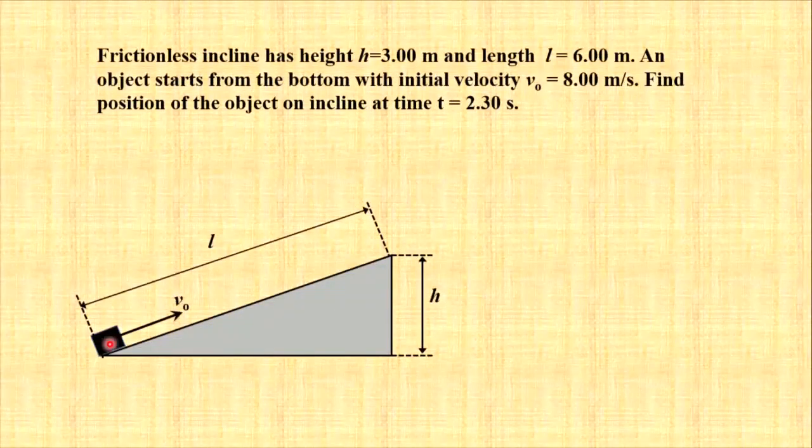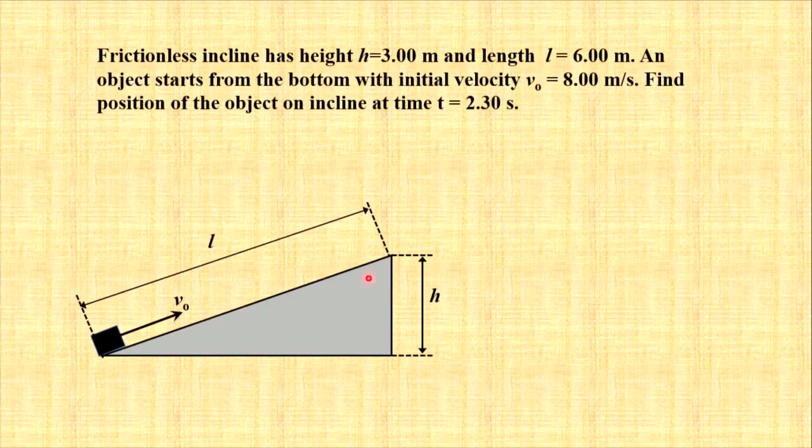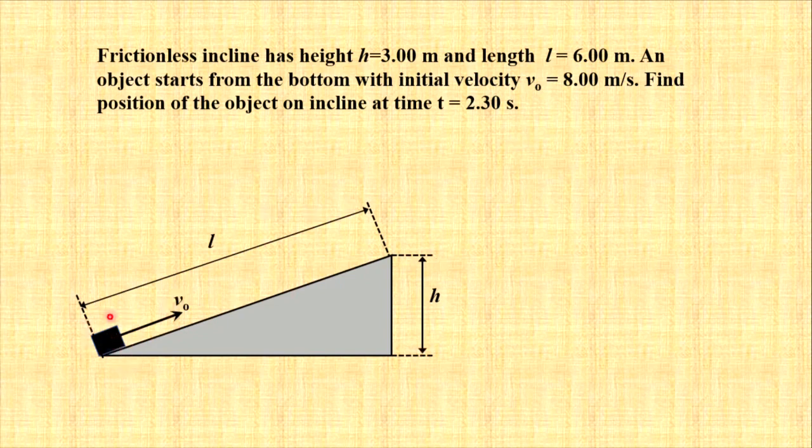Let us consider the frictionless incline which has height h = 3.00 m and length l = 6.00 m. An object starts from the bottom with initial velocity v₀ = 8.00 m/s. Our goal is to find the position of the object on incline at given time t = 2.30 s.